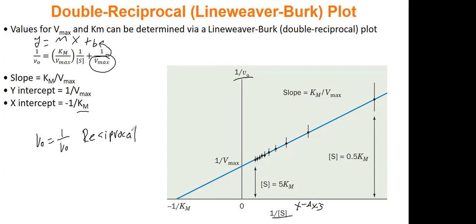And so Lineweaver-Burk, it's called a double reciprocal plot. Both the X and Y axes are one over a variable. So that's why it's double reciprocal. And when you do this, you plot your kinetics data. So each data point is a different experiment. Your X axis will be negative one over Km. Your Y axis will be one over Vmax.